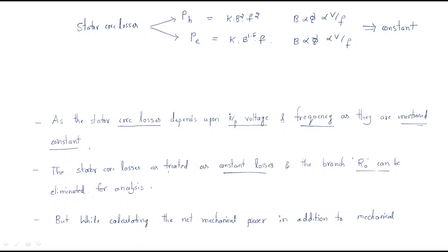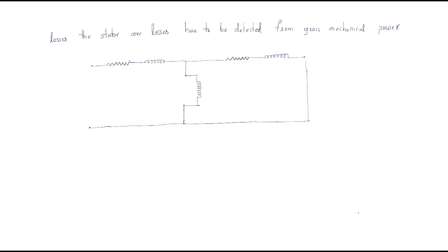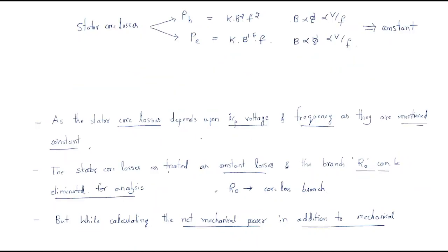Since these stator core losses are constant, the R0 branch can be eliminated for the analysis. There is no variation, so we can remove this branch. R0 represents the core loss branch, but when calculating the net mechanical power, the stator losses are also considered and must be deducted from the gross mechanical power developed. When considering all losses we will account for this, so the modified circuit simply removes R0.